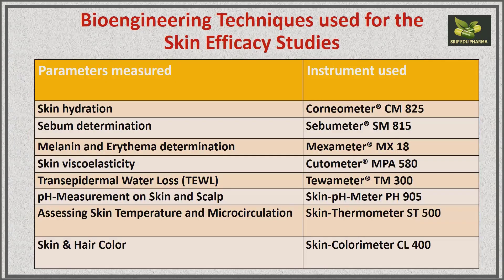The important bioengineering techniques used for skin efficacy studies are: skin hydration, determined by corneometer; sebum determination (lipid content) by sebometer; melanin and erythema — erythema meaning skin hemoglobin or redness — by mexameter; skin viscoelasticity by cutometer; and transepidermal water loss (TEWL) by tewameter. These are instruments made by the Courage and Khazaka company, a German company that specializes in these instruments.